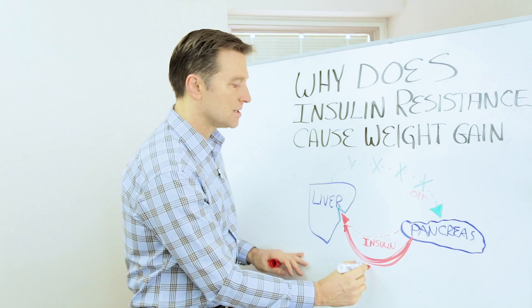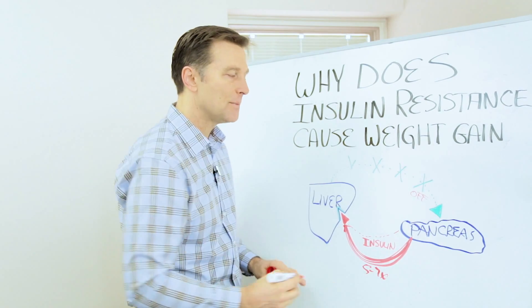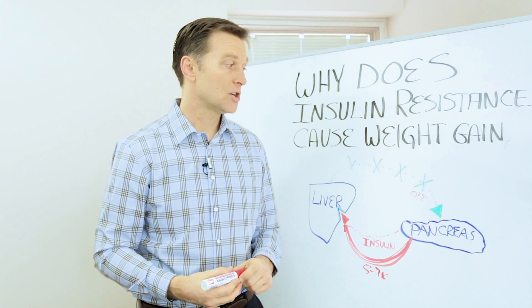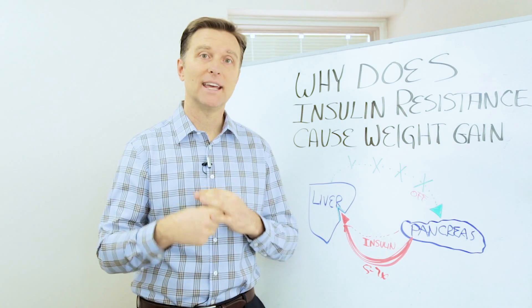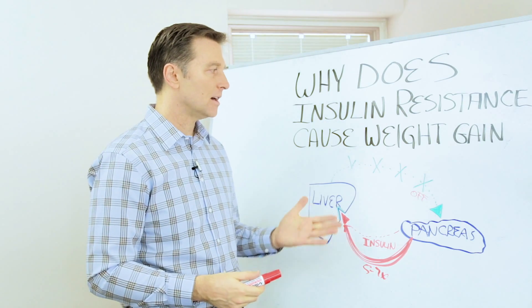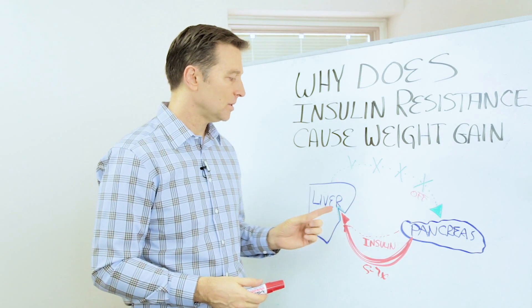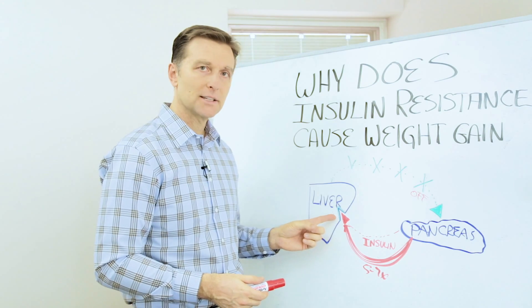So a person with insulin resistance has five to seven times more insulin than a normal person, and that's why they gain weight, because of the excess insulin, simply because this cell is blocked.